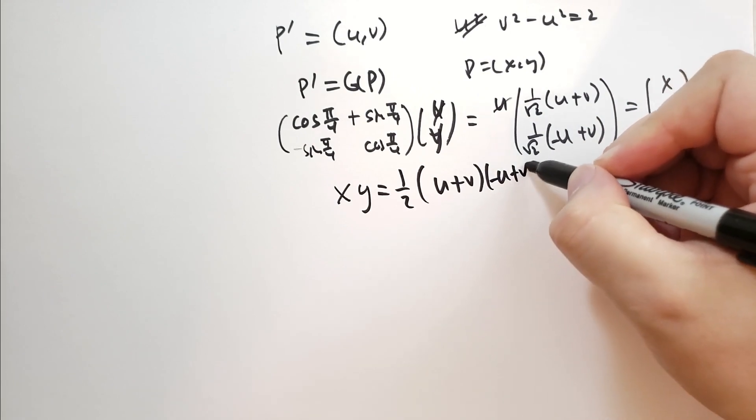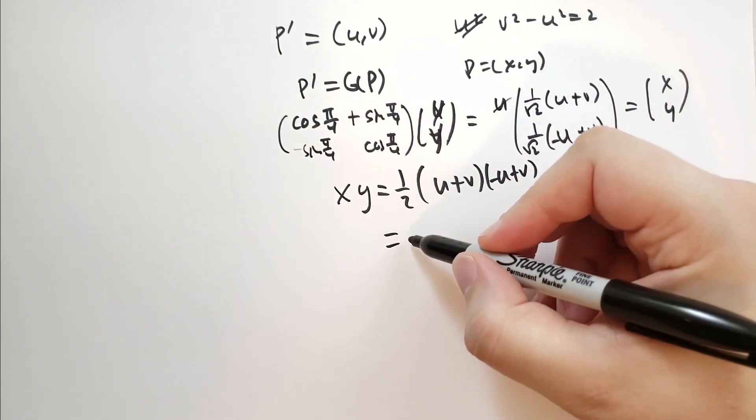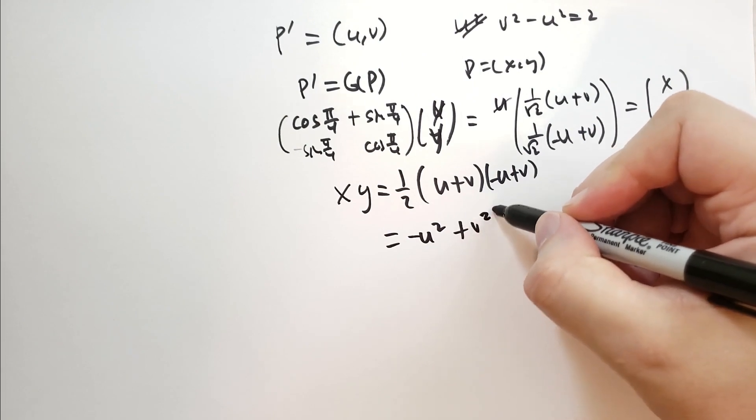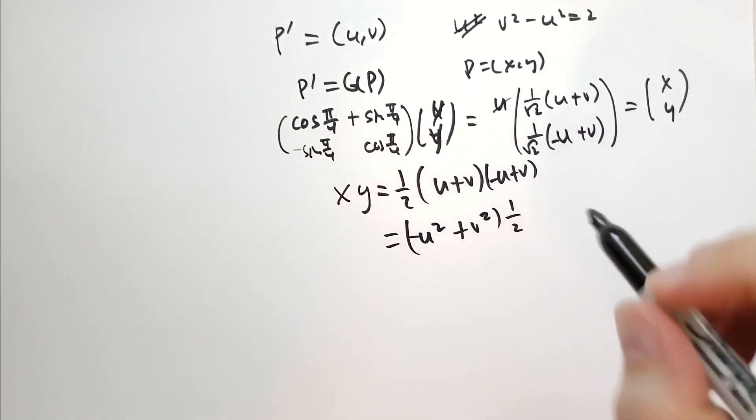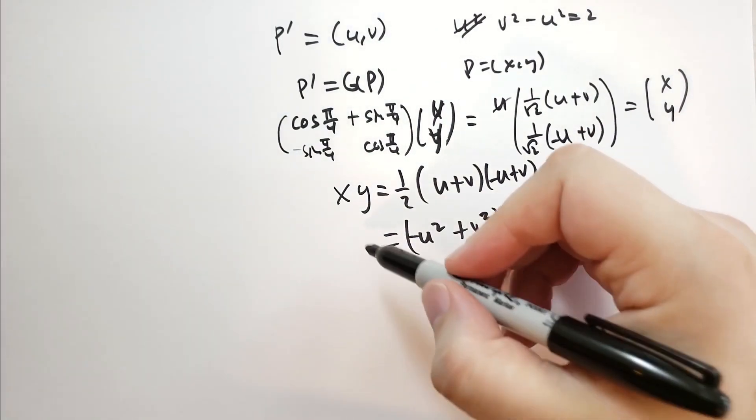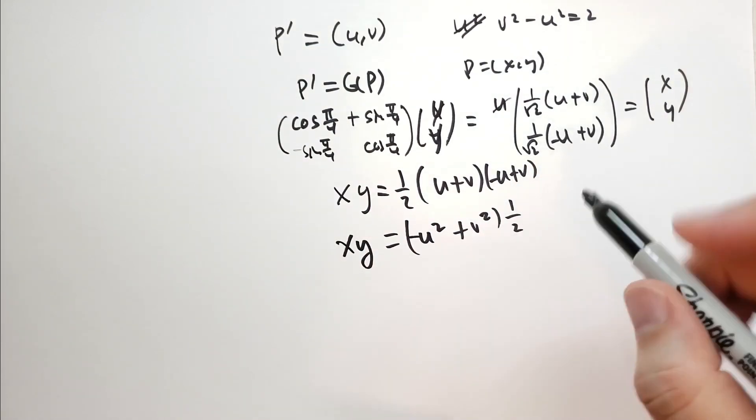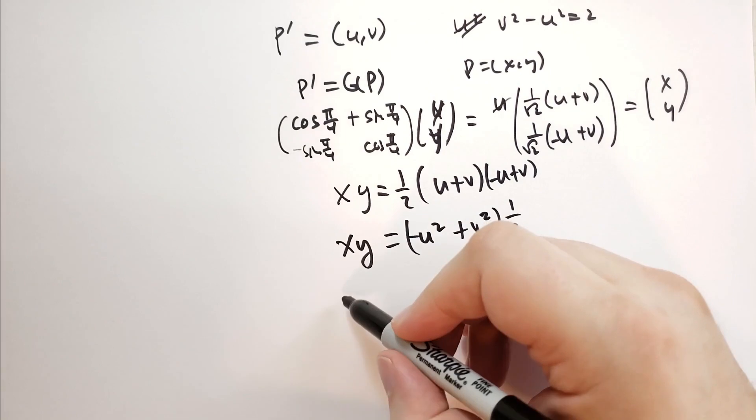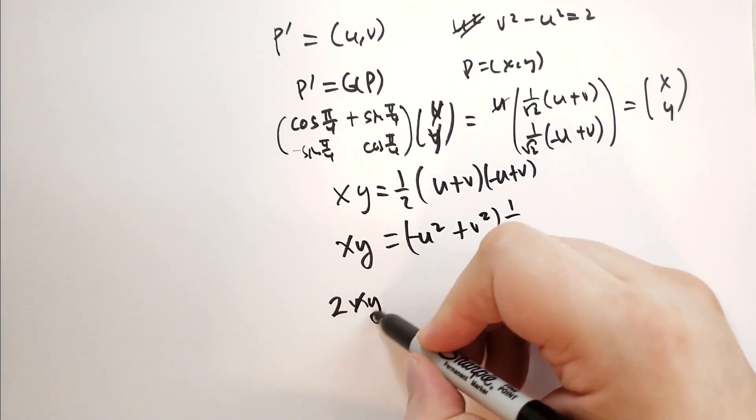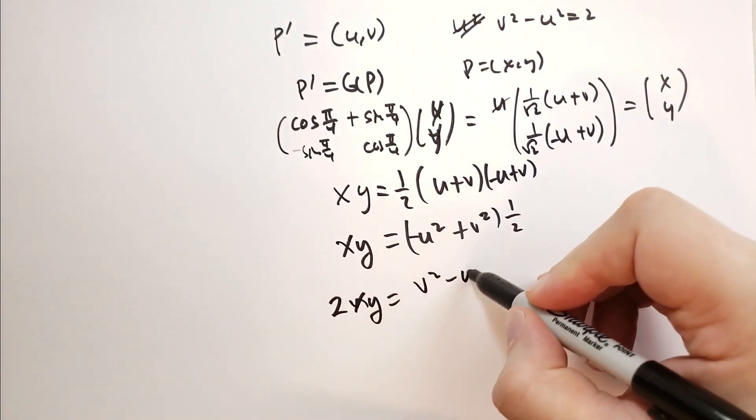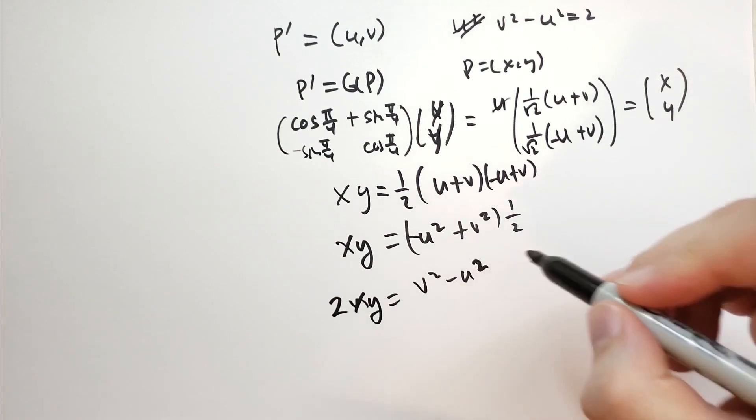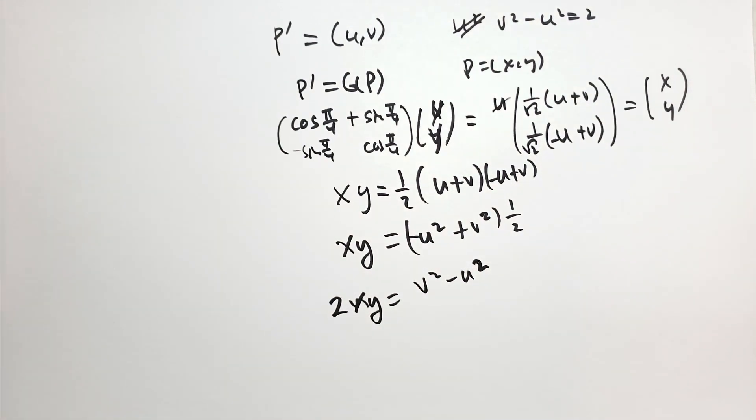And then we're going to have u plus v times minus u plus v. So we're going to get minus u squared plus v squared times 1 half. So xy is equal to that times 1 half. So we can rewrite that as 2xy is equal to v squared minus u squared. And that proves what we set out to do.